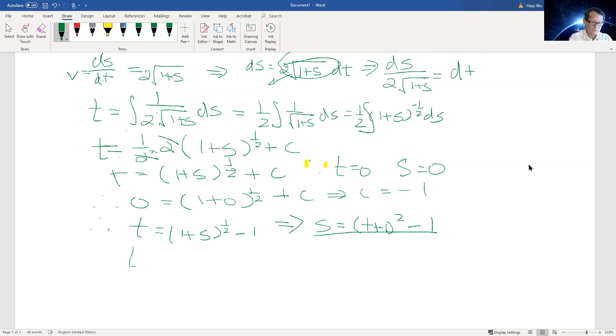When time equals 2, we substitute into the formula: s = (2 + 1)² - 1. Therefore the answer would be 9 - 1, which is 8. So when t equals 2, our displacement is equal to 8 meters.